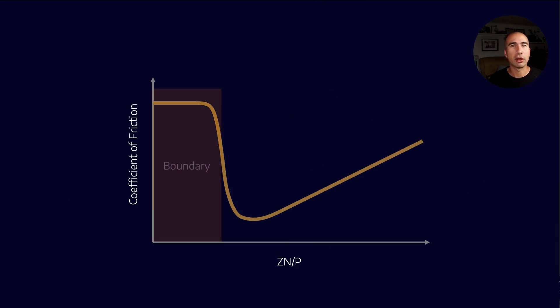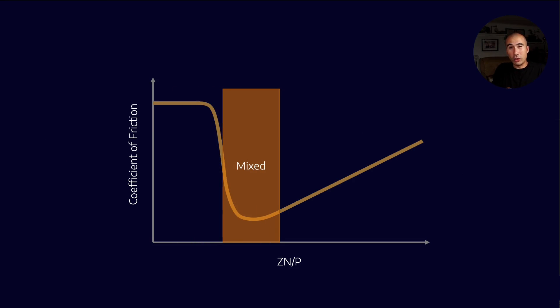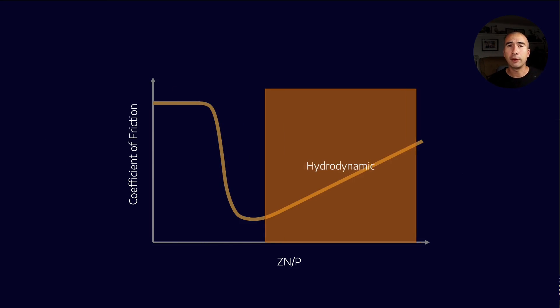And so that's how you build out these three different components of friction. We have the boundary, where it's metal on metal. We have the mixed, in which case we're starting to rise up into that lubricant film and we have a coefficient of friction that dramatically drops. And finally, we have hydrodynamic, where we're riding up on that fluid.